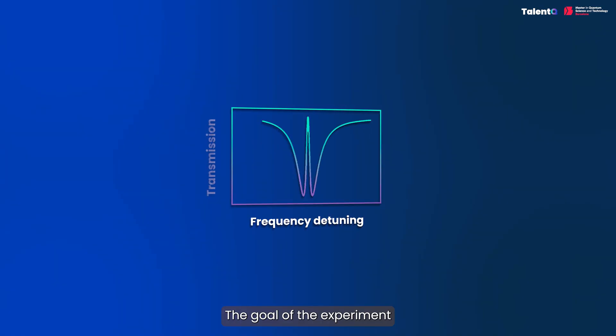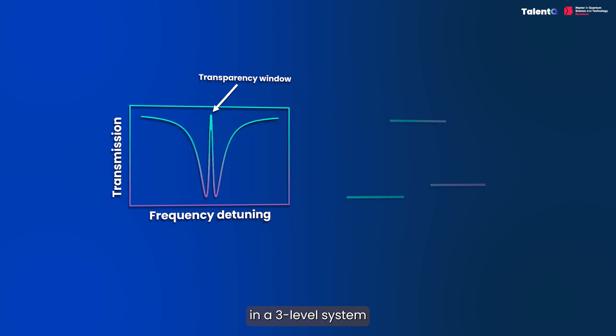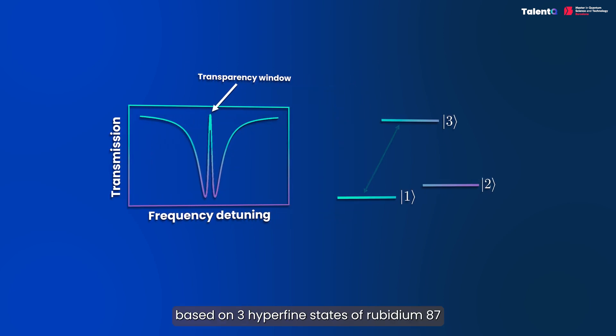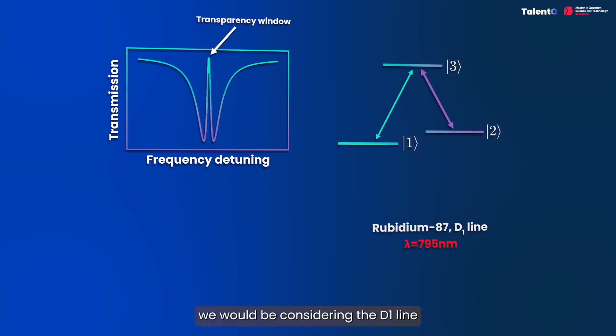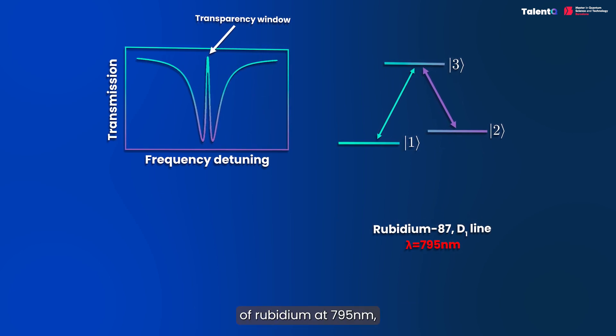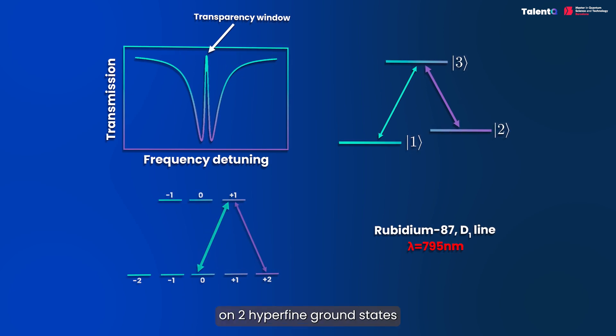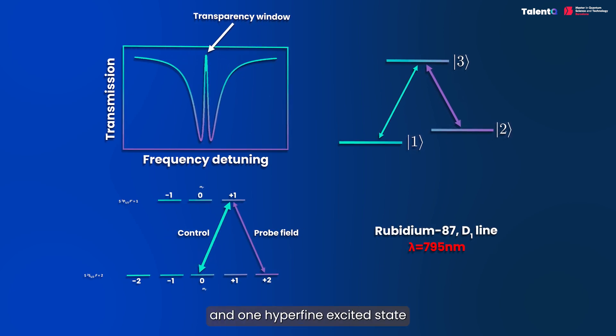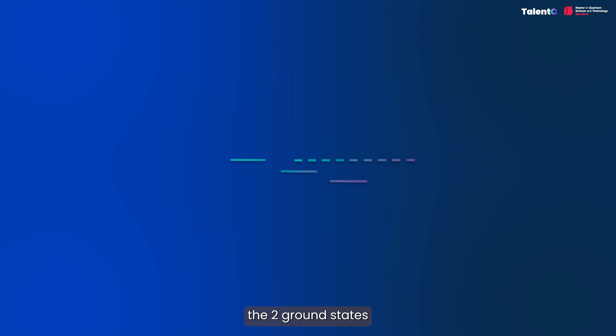The goal of the experiment is to detect the transparency window of EIT in a three-level system based on three hyperfine states of Rubidium 87. In particular, we will be considering the D1 line of Rubidium at 795 nanometers and work with a lambda scheme based on two hyperfine ground states and one hyperfine excited state. In this case, the energy difference between the two ground states can be quite small, a few kilohertz, which will allow us to use a single laser to address the two relevant transitions.